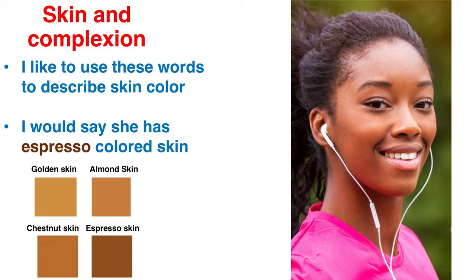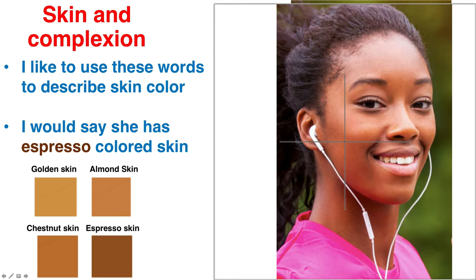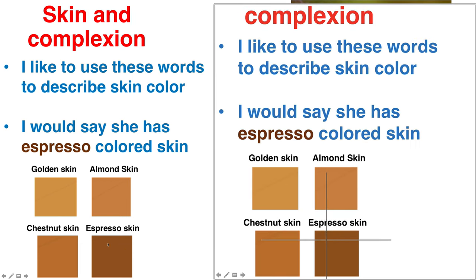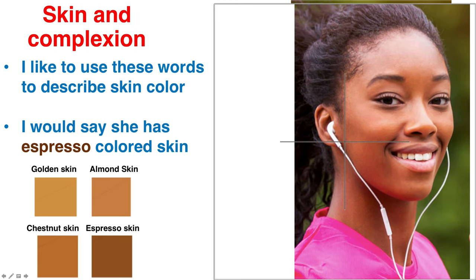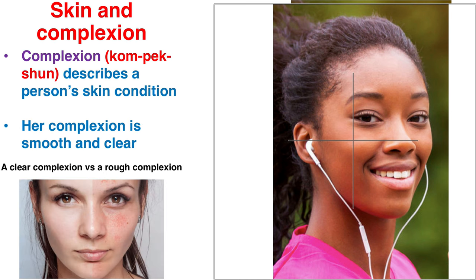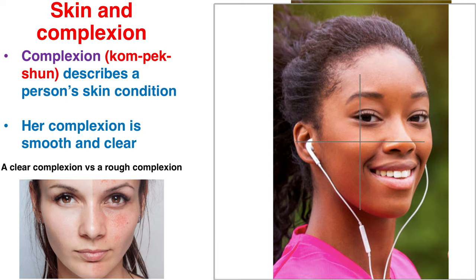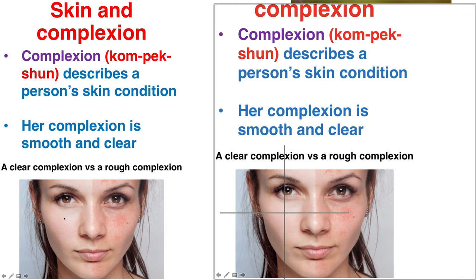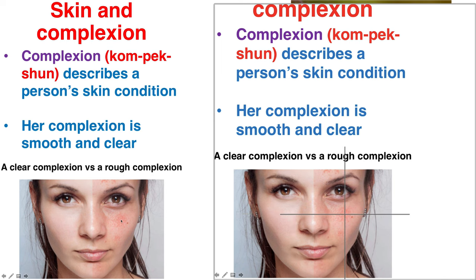Now skin and complexion. Rather than use words like race, African-American, Caucasian, or Latino, I like to use these types of descriptive words. Looking at her skin, it's relatively dark, and I would describe this as espresso colored skin. She's got nice espresso colored skin. Complexion describes a person's skin condition. I would describe her complexion as smooth and clear — not very bumpy and without many blemishes. Smooth and clear versus rough with more blemishes.